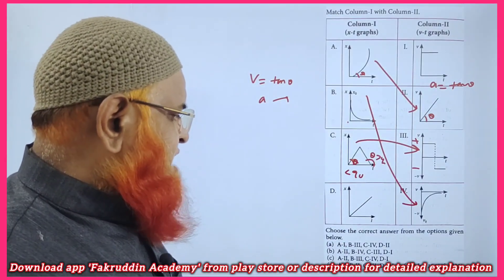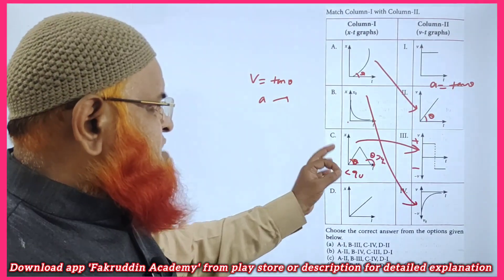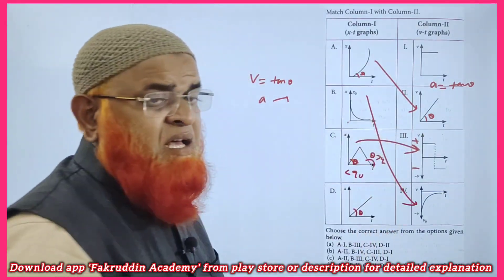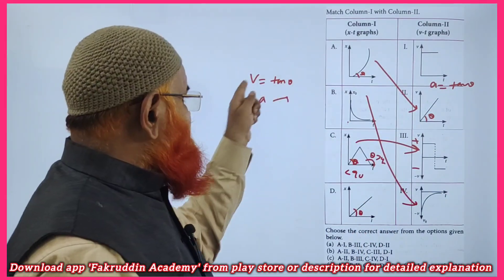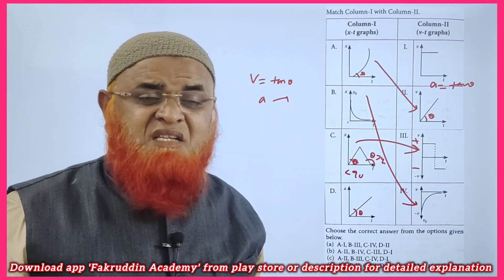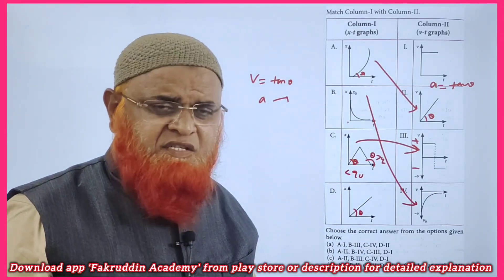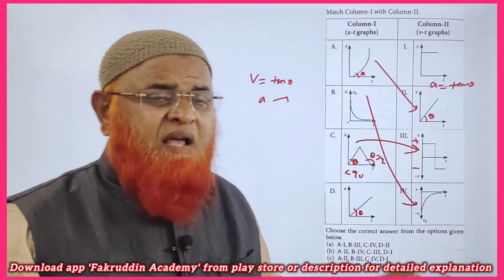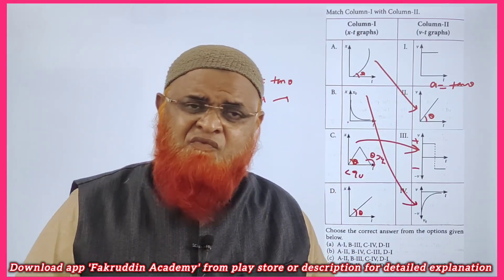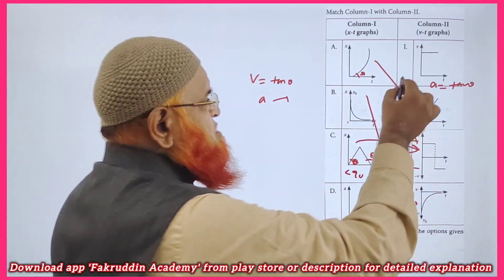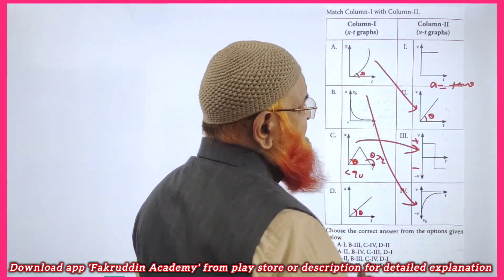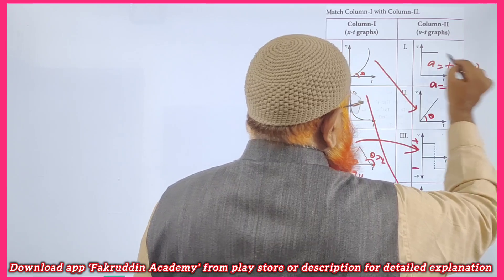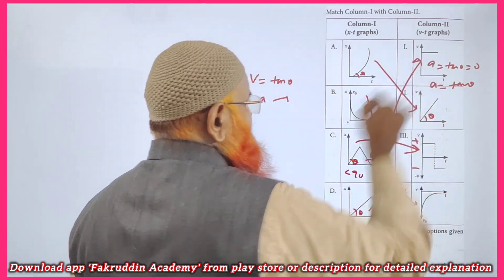Now for graph B: it represents constant velocity because theta is constant — it is a straight line, so velocity is uniform. When velocity is constant there is no acceleration; a body moving with constant speed has zero acceleration. In the velocity-time graph, theta is 0° (making 0 degrees with the time axis), so acceleration equals tan 0° = 0. The fourth option matches this graph. Hope you have understood.